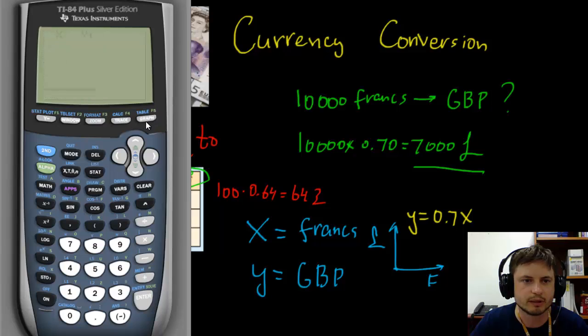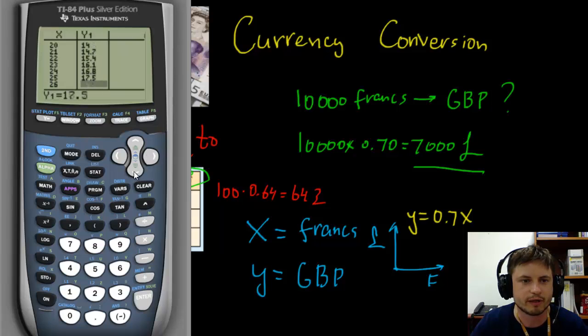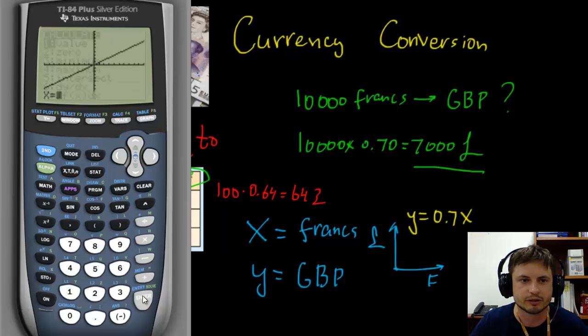So for example, ten francs is seven British pounds, or seven British pounds is ten francs. If you want to find, you know, you have twenty British pounds, how many francs is it? Well, it's actually twenty nine. Twenty point three British pounds is actually twenty nine francs. So that's a very easy way of doing this. You can do the same thing for Korean won and Canadian dollars, American dollars. And if you need a very large value or a specific value, you can just use calc and calculate.